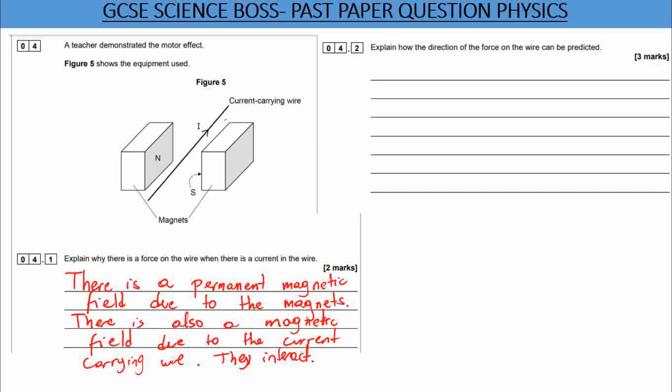Now, next question says, and students often have so much difficulties with this. And it is very understandable. But you can still get marks. Explain how the direction of the force of the wire can be predicted. So when you place the wire inside this magnetic field here, the wire is going to move. There is a force which causes that wire to move.